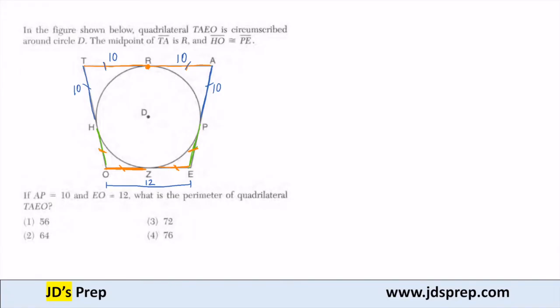So because, let me take a different color here, I know HO is congruent to PE. I also know HO is congruent to OZ. These sides here are the same. Then all four pieces on the bottom have to be the same, which means that OZ has to be congruent to EZ. And if that whole length is 12, then each of these pieces has to be 6.